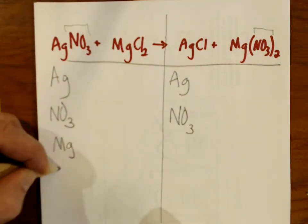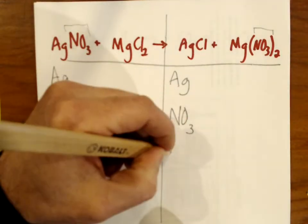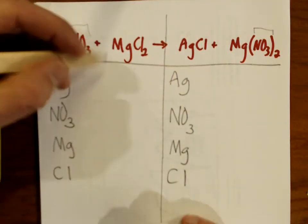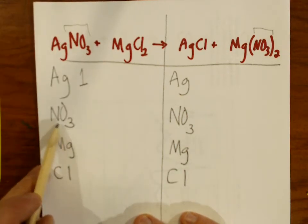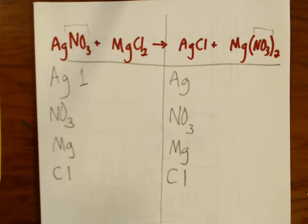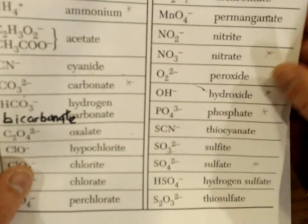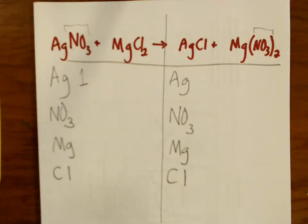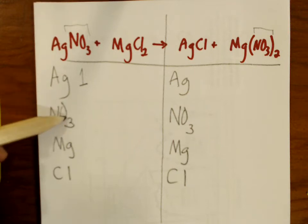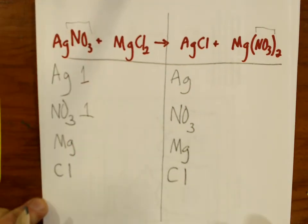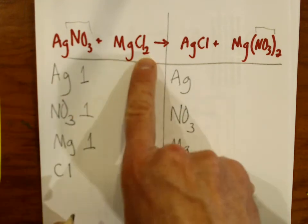Let me finish the inventory list with magnesium and chlorine on both sides. Now let's count: one silver. How many nitrates? Nitrate is NO3 — that three is part of the nitrate, just like the G is part of silver. So I see exactly one nitrate. One magnesium atom, two chlorine atoms on the reactant side. On the product side: one silver atom. And NO3 is in parentheses with a little two on the outside — that means two nitrates. One atom of magnesium, one atom of chlorine.